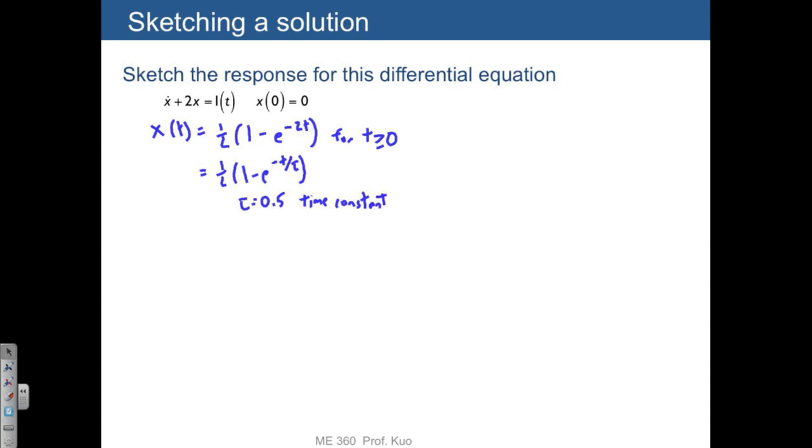Why don't we just sketch what this would look like real quickly? Basically, the asymptote for this system is it's eventually going to reach a final value of 1 half. That's the steady state final value.